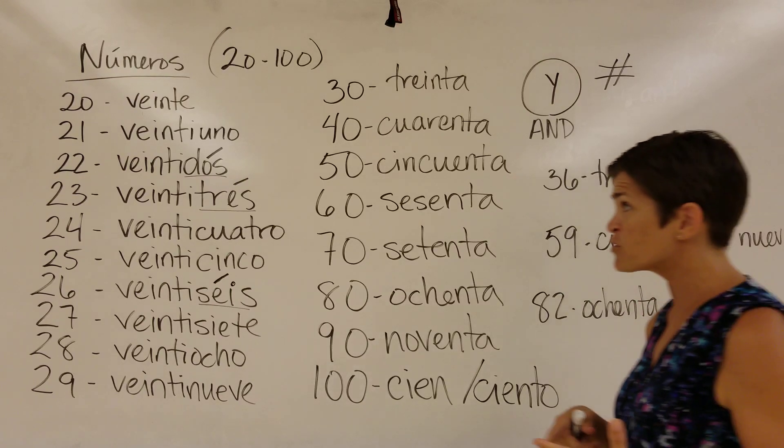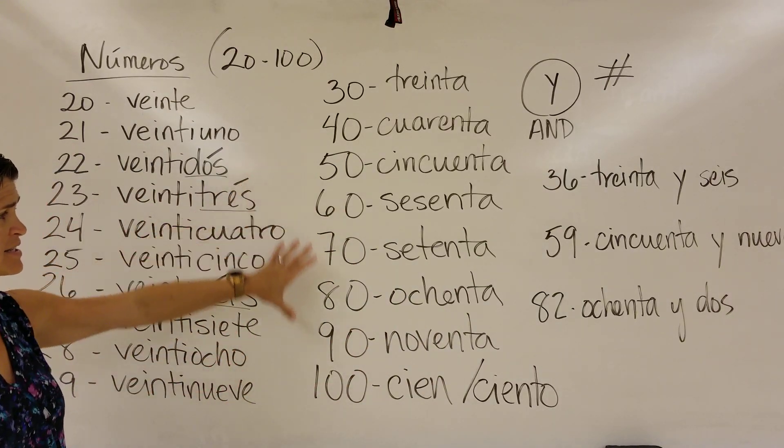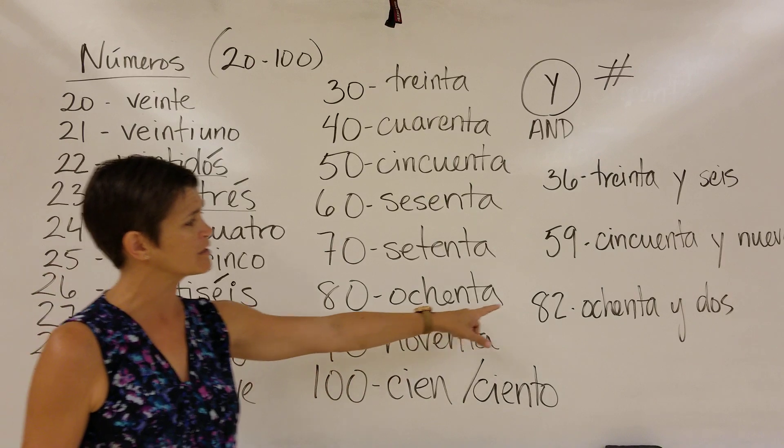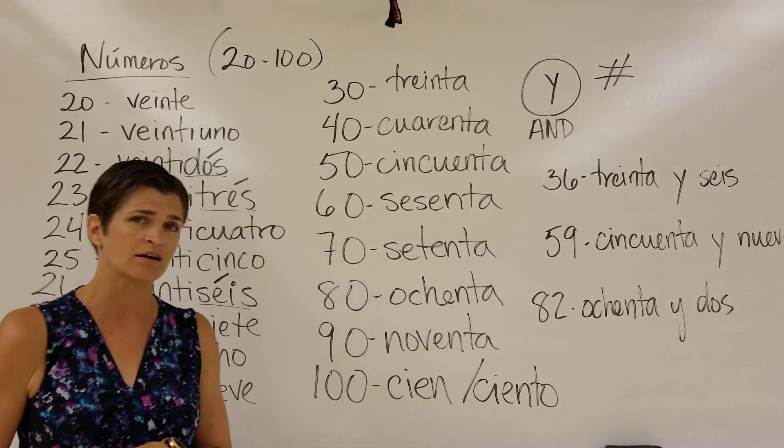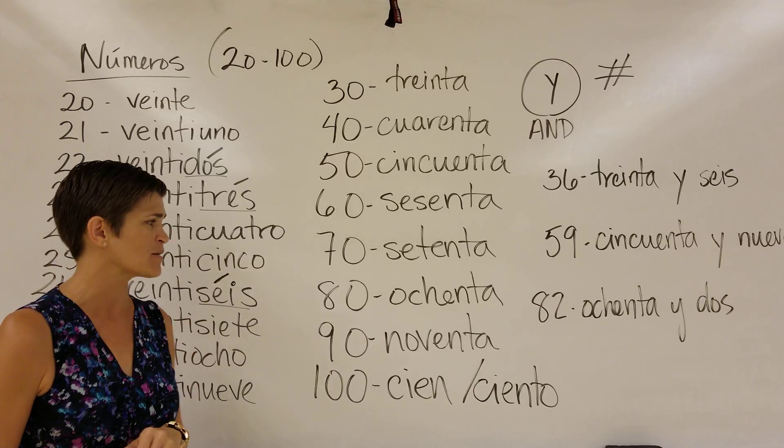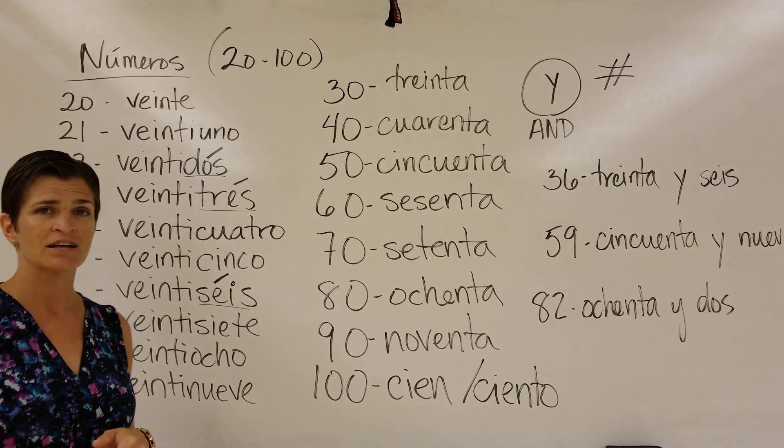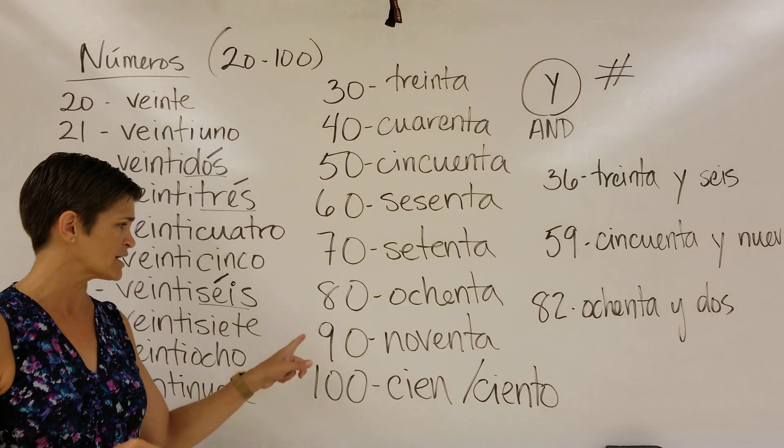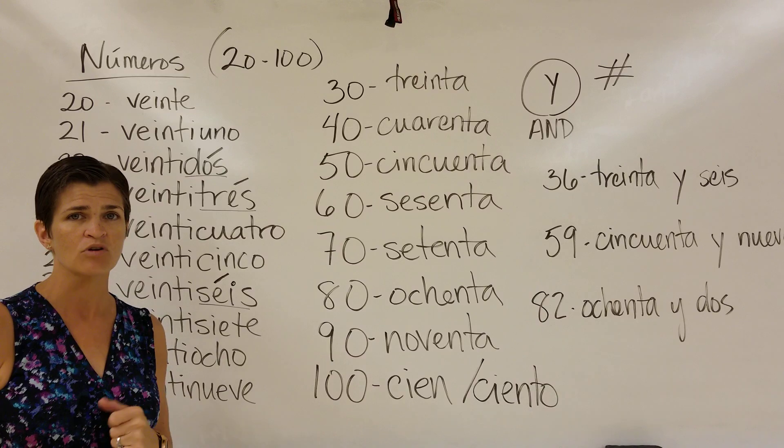Now what I want you to do for practice is I want you to pick 10 numbers that you can practice that have a tens place and a ones place. You may not use my three examples here: 36, 59, and 82 do not count. You need 10 different examples. So 87, 93, you're going to write them as a number like this numerically and then spell it out in Spanish for me and turn that in tomorrow with your notes.